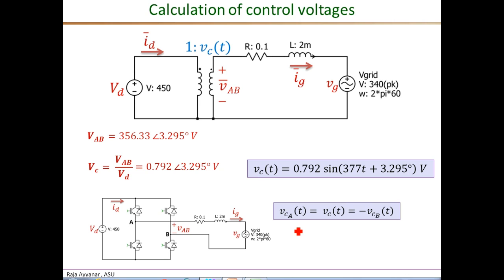If we went ahead and applied these voltages VCA and VCB with the corresponding DC and grid voltages, we will see that we get 5 kilowatts of power flow from the DC to AC side at 0.866 lagging power factor. We will verify that in simulation in one of the later videos.